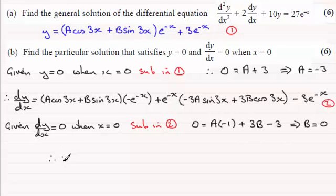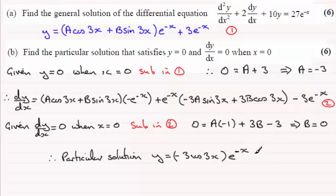So therefore we've got our particular solution now that we've got our values for A and B. So our particular solution, let's just put an intro there, is Y equals and we've got up here A which is minus three, minus three cos three x and then B which is zero so that's gone, times all of e to the power minus x and then plus three e to the minus x.